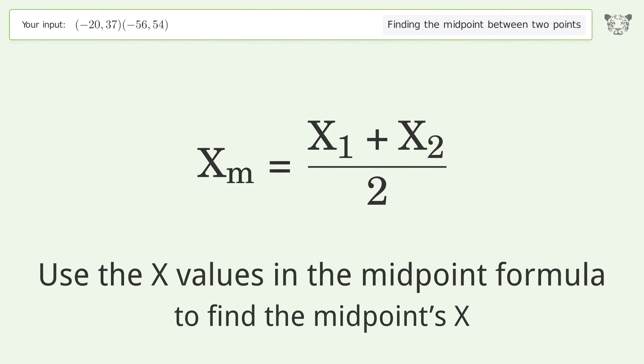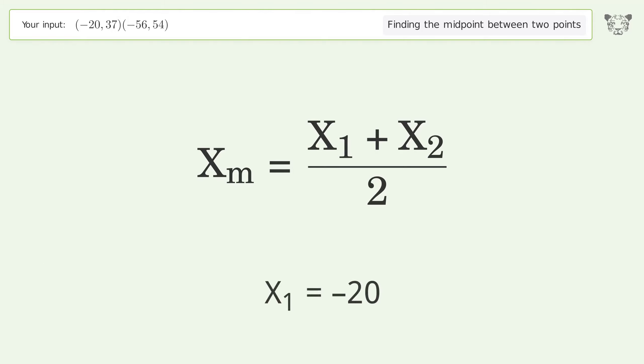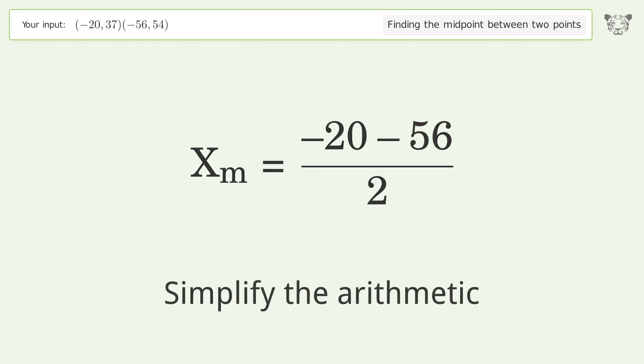Use the x values in the midpoint formula to find the midpoint's x. x₁ = -20, x₂ = -56. Simplify the arithmetic.